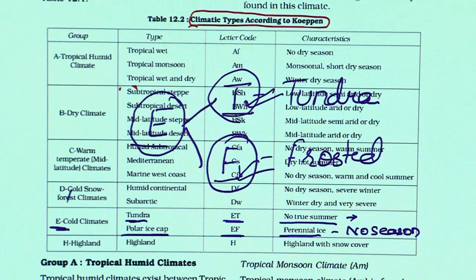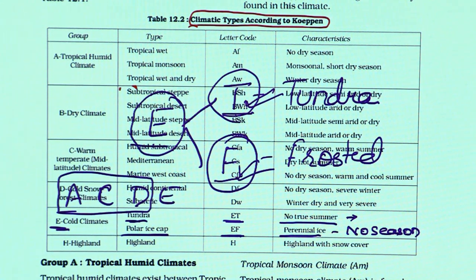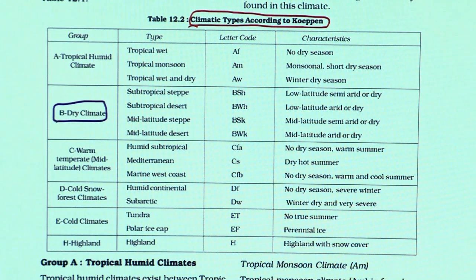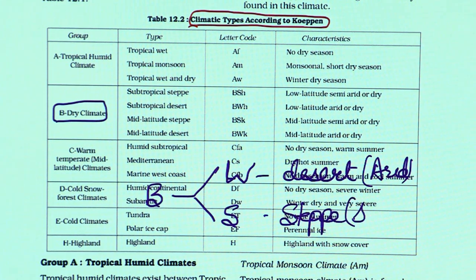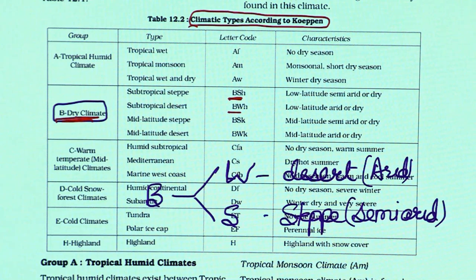B-type climate also has a third-level symbol distinguishing temperature: H stands for hot (German for hot) and K stands for Kalt (German for cold). BSH and BWH are low-latitude semi-arid and arid. BSK and BWK are mid-latitude. So BW has W and S at second level, with H and K at third level. Gobi Desert is BWK, Sahara Desert is BWH.